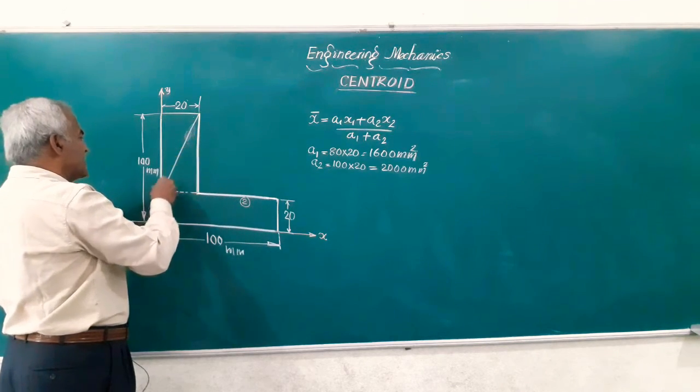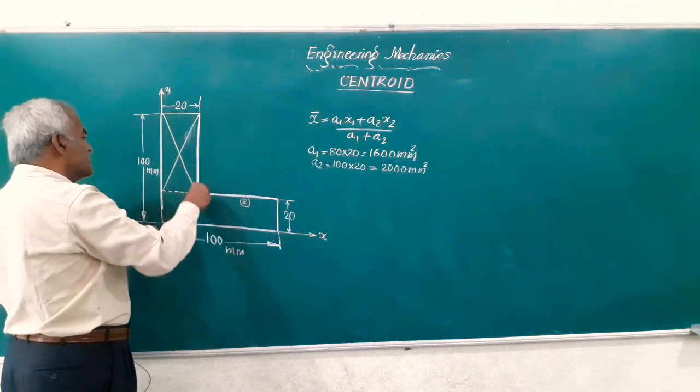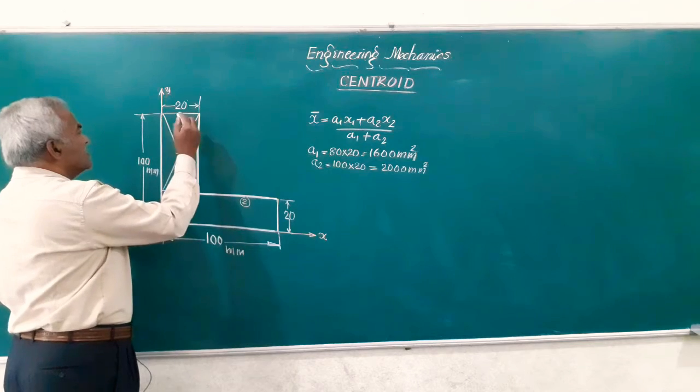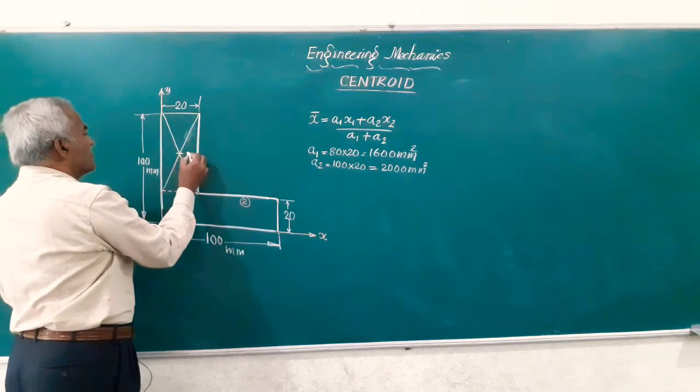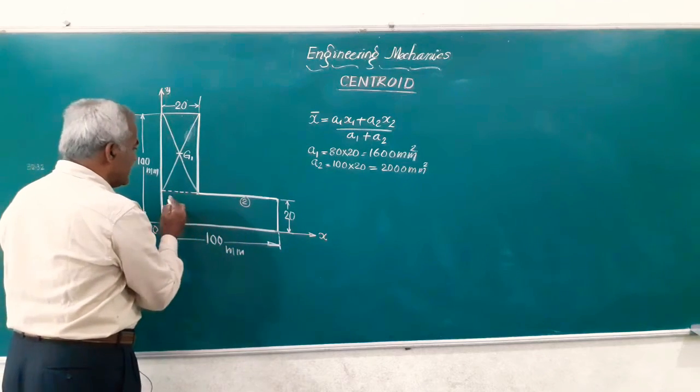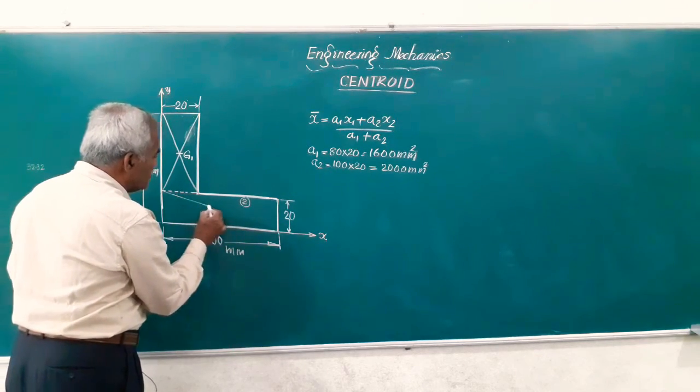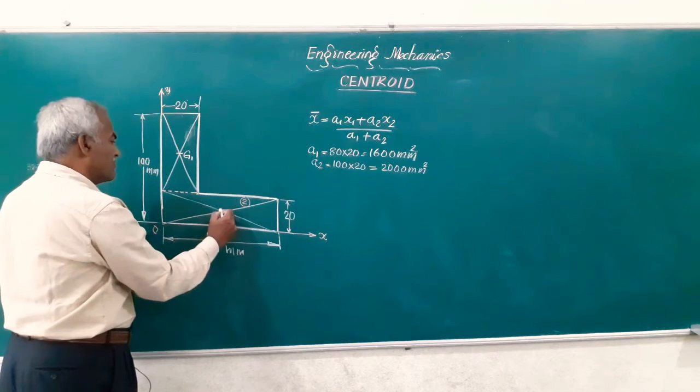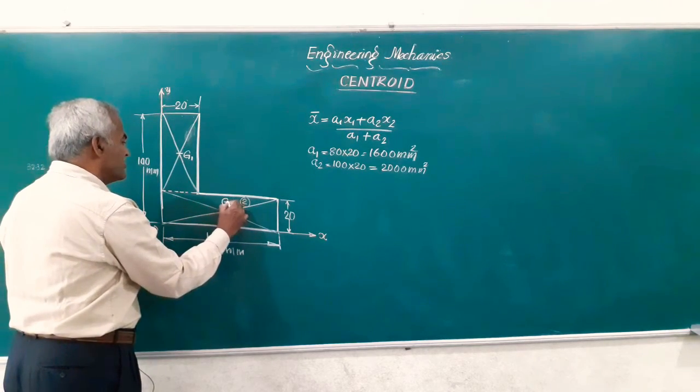Suppose if you just join like this, these two diagonals intersect at this point, this is figure number 1 and I will call this as g1. Similarly, for the second rectangle the same lines if you join, the diagonals they meet at a common point I will call this as g2.